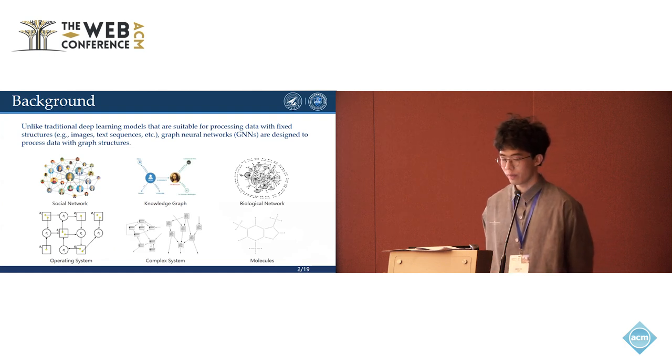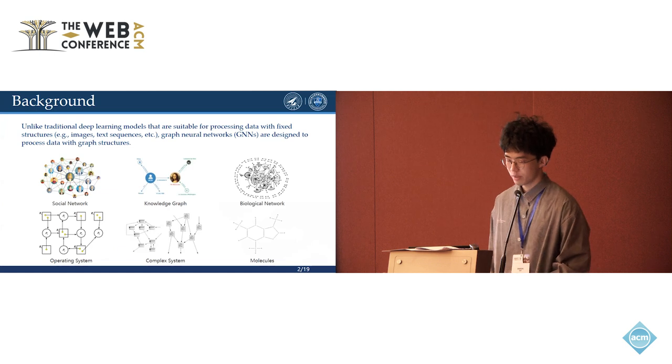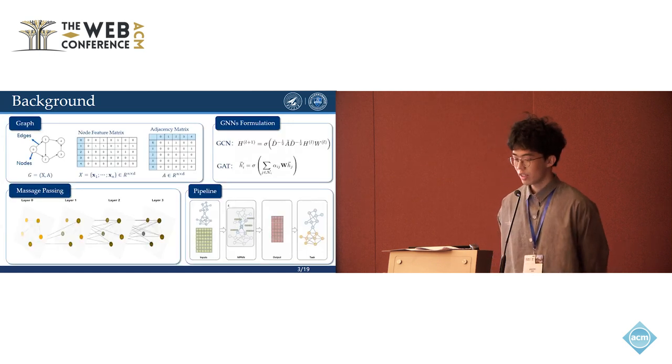GNN is designed for data with graph structures. GNN are typically used to process attribute graphs. Two classic works are GCN and GAT.